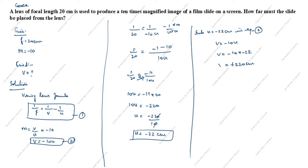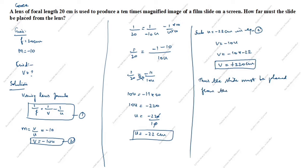Therefore v equals 220 centimeter. Thus the slide must be placed from the convex lens at a distance of 220 centimeter. Thanks for watching this video.